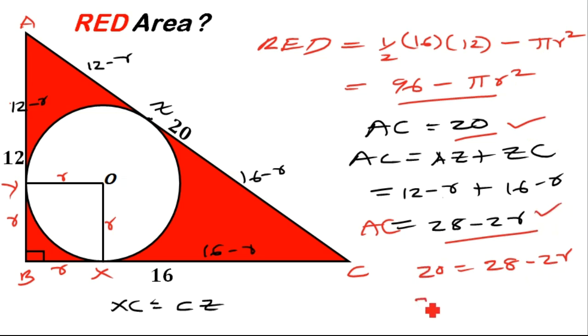So negative 2R coming this side becomes positive 2R. Then 20 going the other side becomes minus 20. So we now have 2R is equal to 28 minus 20. So it means R is equal to 4, because we are going to get 2R is 8, implies R is 4.